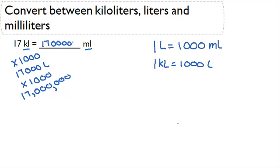So we're going to need six zeros here since we multiplied by 1,000 twice. So we have 17 million milliliters in 17 kiloliters.